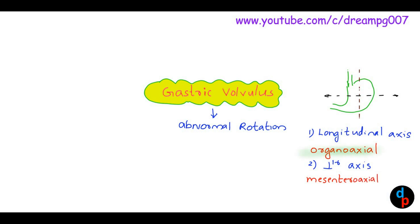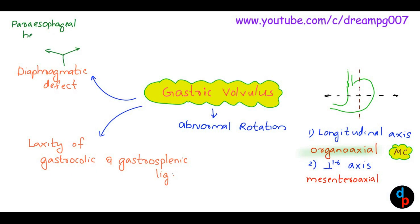The most common rotation takes place in the longitudinal axis. The predisposing factors for this gastric volvulus include diaphragmatic defect and laxity of gastrocolic and gastrosplenic ligament. Diaphragmatic defect includes paraesophageal hernia and congenital diaphragmatic hernia. Paraesophageal hernia is more common in adults, whereas congenital diaphragmatic hernia is more common in children.